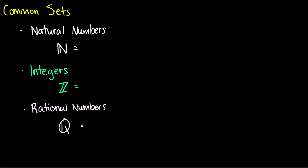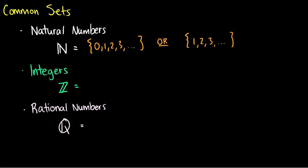There are a few common sets we should talk about. One of them is the natural numbers — and there's still some controversy. There are two ways to define the natural numbers: one is to start with zero, then one, two, three, all the way up forever. Another group of mathematicians starts the natural numbers with one, two, three, and so on. I'm going to refer to the natural numbers starting with one as the positive integers, and when I talk about natural numbers I will usually mean including zero, but I will specify whether it includes zero or not.